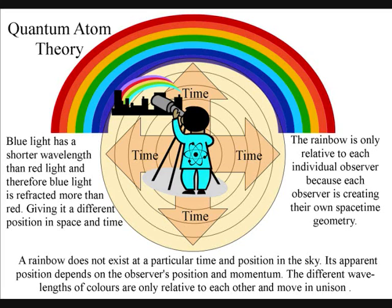The different colours will have different positions in space and time, therefore forming rainbows of colour. A rainbow is only relative to each individual observer, because each observer is creating their own space-time geometry.